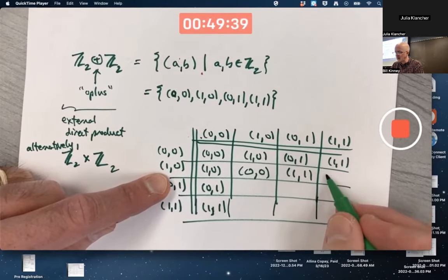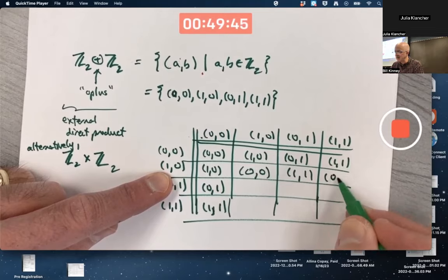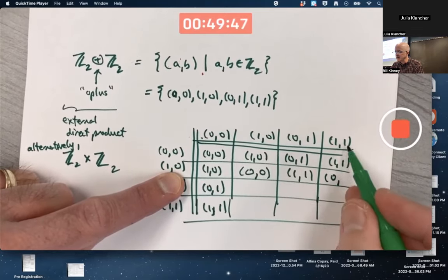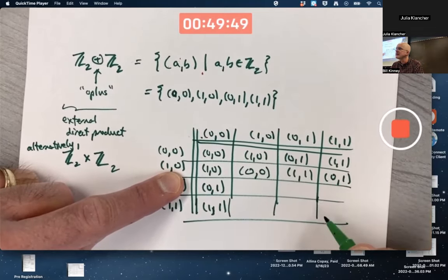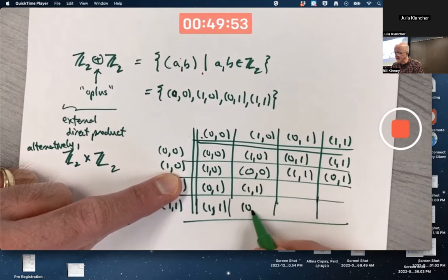What's (1,0) plus (1,1)? For the first component, do 1 plus 1, mod 2 to get 0. For the second component, do 0 plus 1 to get 1. And yeah, this is an abelian group. You can quickly fill those in.